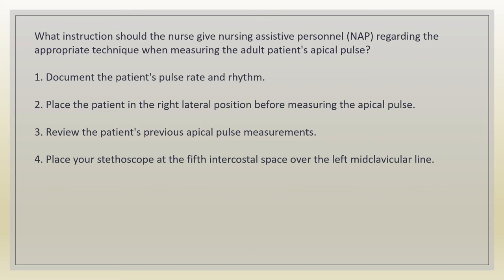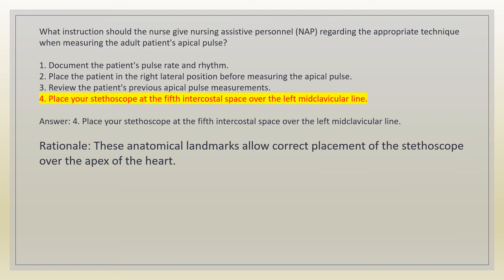What instruction should the nurse give nursing assistive personnel regarding the appropriate technique when measuring the adult patient's apical pulse? 1. Document the patient's pulse rate and rhythm. 2. Place the patient in the right lateral position before measuring the apical pulse. 3. Review the patient's previous apical pulse measurements. 4. Place your stethoscope at the fifth intercostal space over the left midclavicular line. Answer: 4. Rationale: these anatomical landmarks allow correct placement of the stethoscope over the apex of the heart.